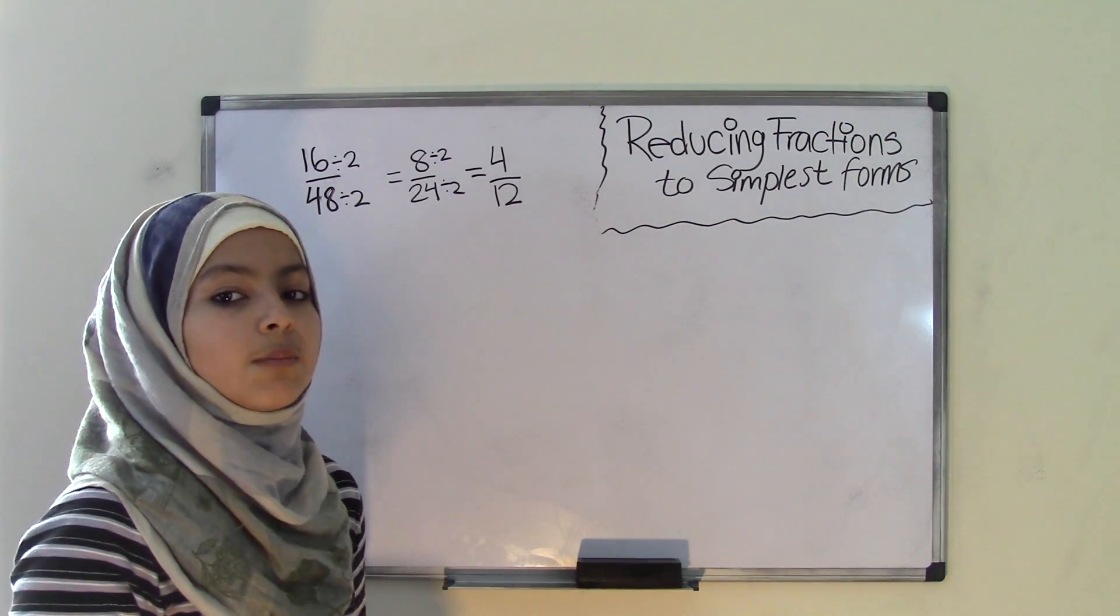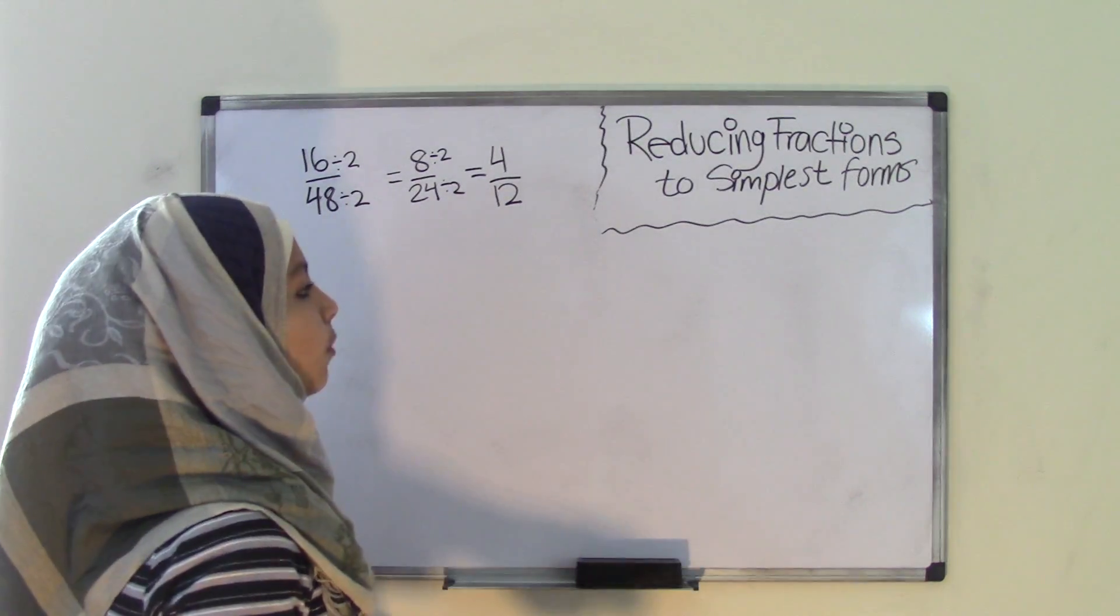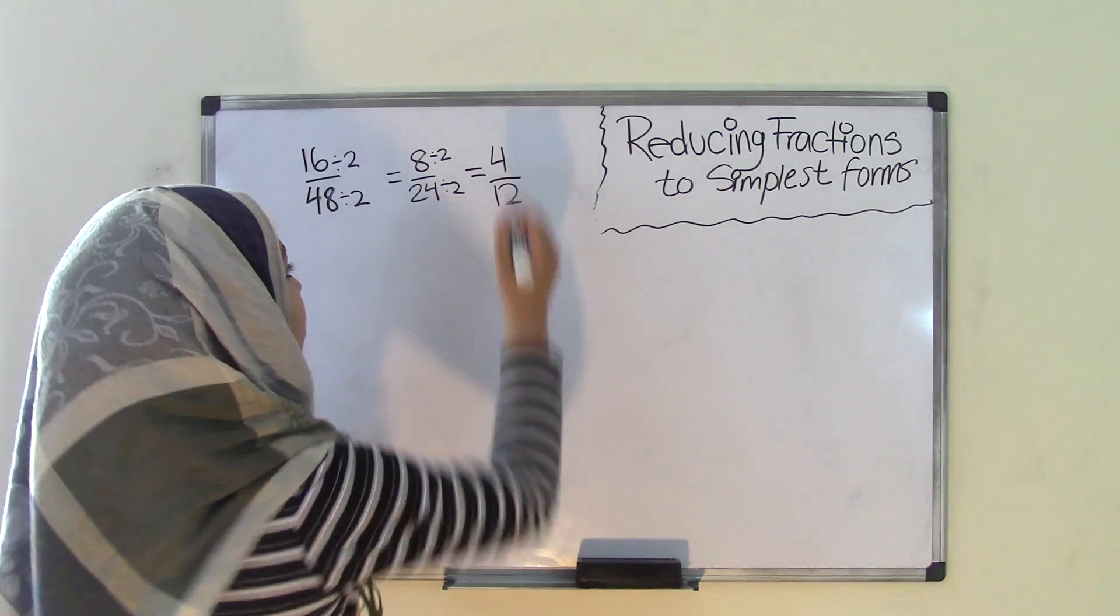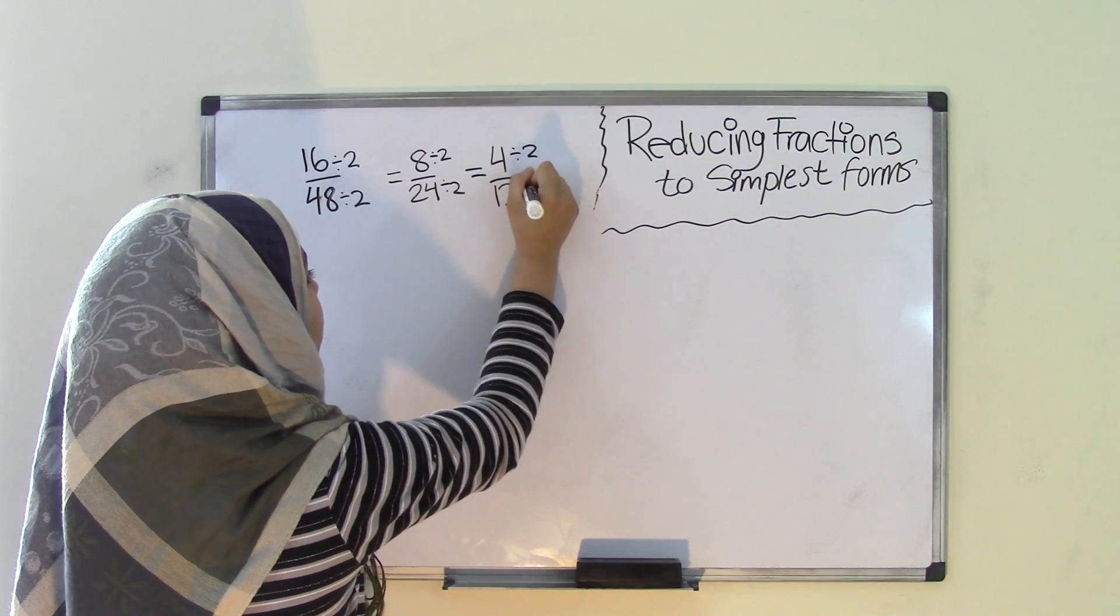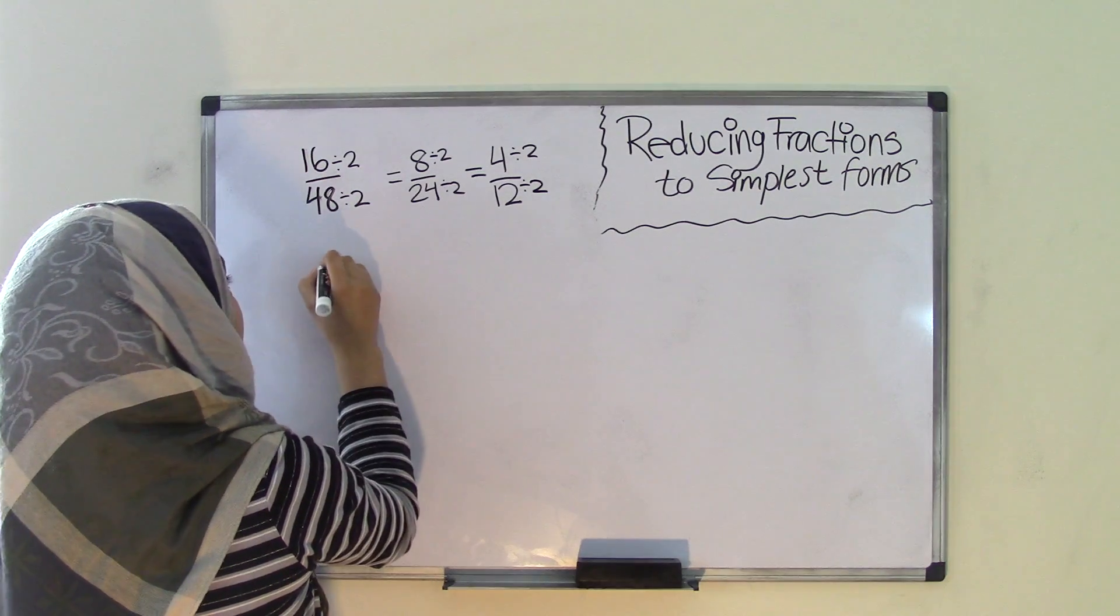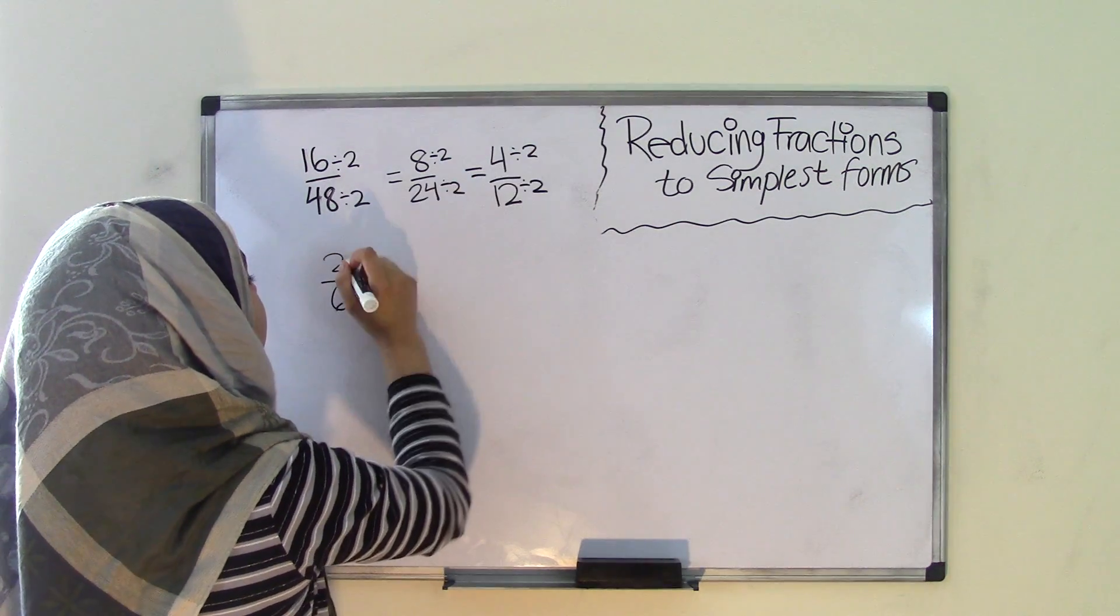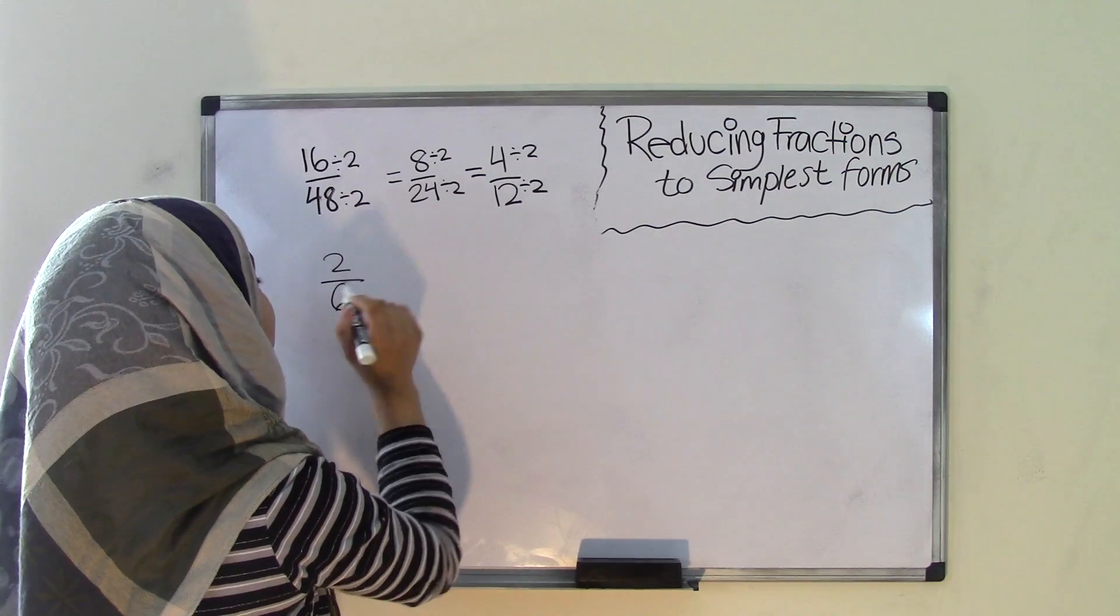Now 4 over 12 can also be simplified further because we can divide both of these numbers by 2. So if we were to do 4 divided by 2 and 12 divided by 2, we would get 2 over 6 because 4 divided by 2 is 2 and 12 divided by 2 is 6.